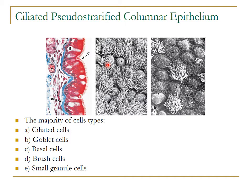The ciliated pseudostratified columnar epithelium, or respiratory epithelium, consists of the following cell types: tall columnar ciliated cells, which form the majority; goblet cells, which secrete mucus and are filled with mucus and glycoproteins and do not take up stain; short basal cells present near the basement membrane; brush cells with small microvilli; and small granule cells.